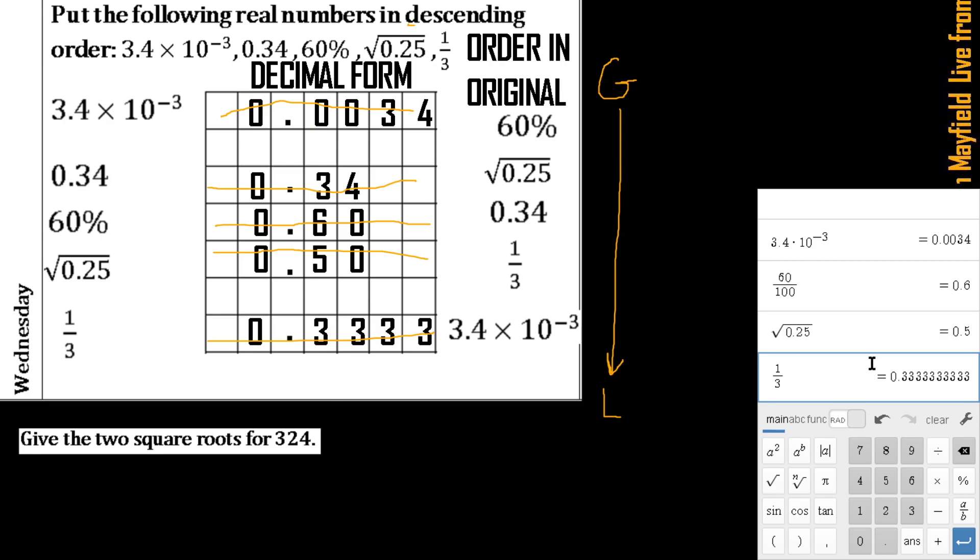Now we have for the second one, it says give the two square roots for 324. You can check what's going to be one of those square roots, so we take the square root of 324 and we say okay, it's going to be 18. So right away I can say 18, but it says two square roots.